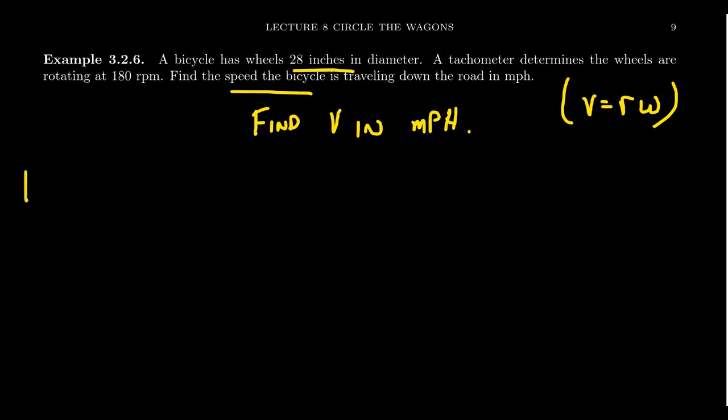We're told that the diameter of the bicycle wheel is 28 inches. So this tells us that the diameter will equal 28 inches. And taking half of that, the radius is equal to 14 inches. So we do have the radius. That's good. What about the angular velocity, ω?